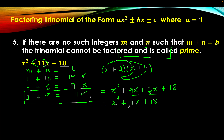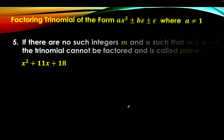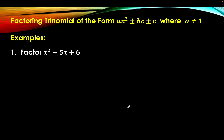Now, for better understanding, let's have some more examples. Number 1: factor x squared plus 5x plus 6. Let's remember step 1 — we're going to list all pairs of integers whose product is c. And c here is equal to 6.